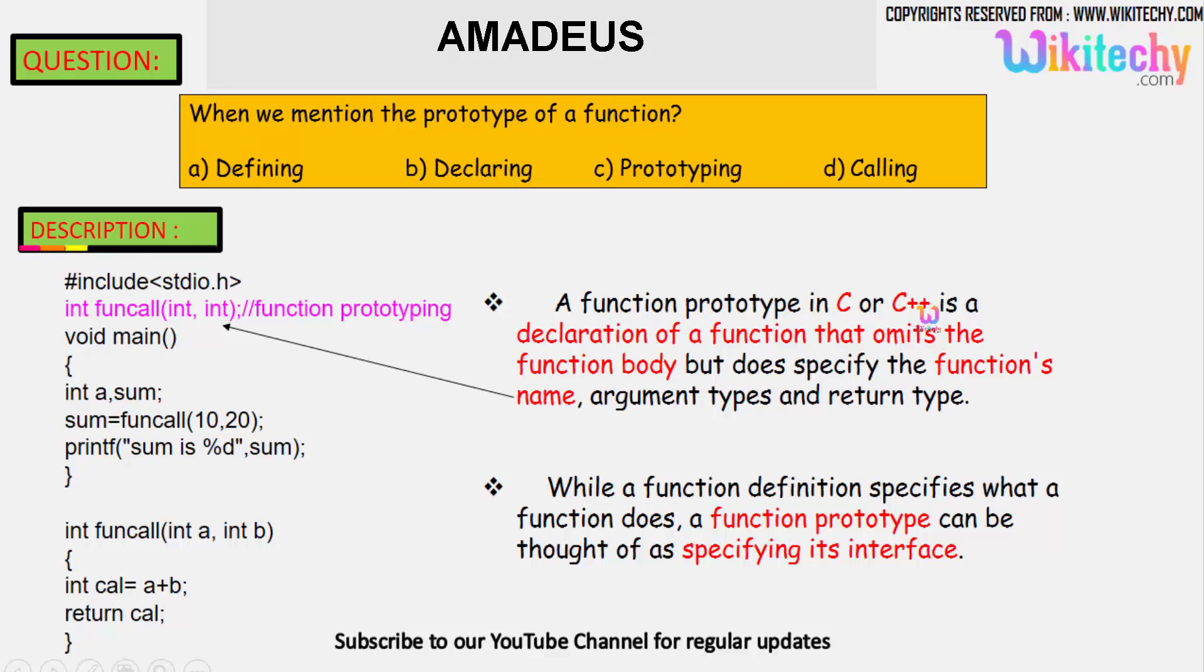A function prototype in C or C++ is a declaration of a function that omits the function body but specifies the arguments and its return types. You have two integer arguments and the function is returning an integer.